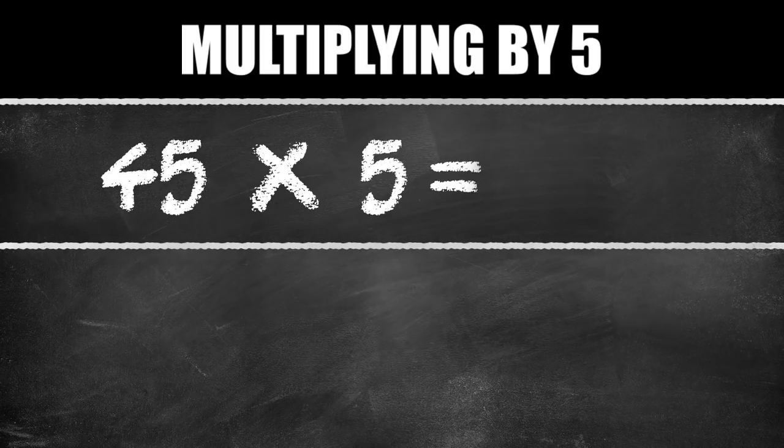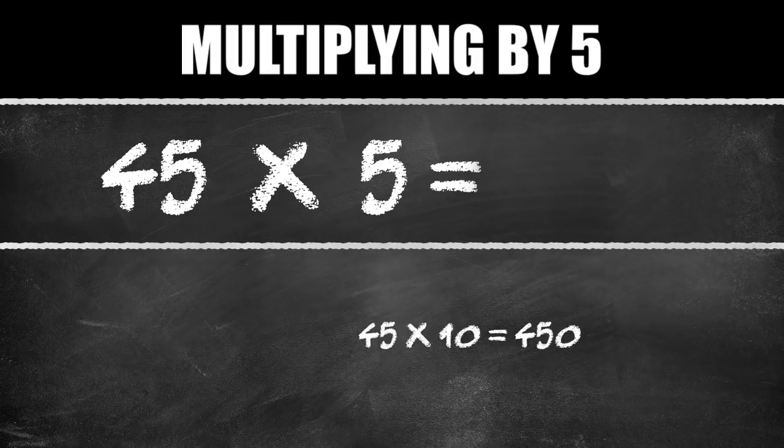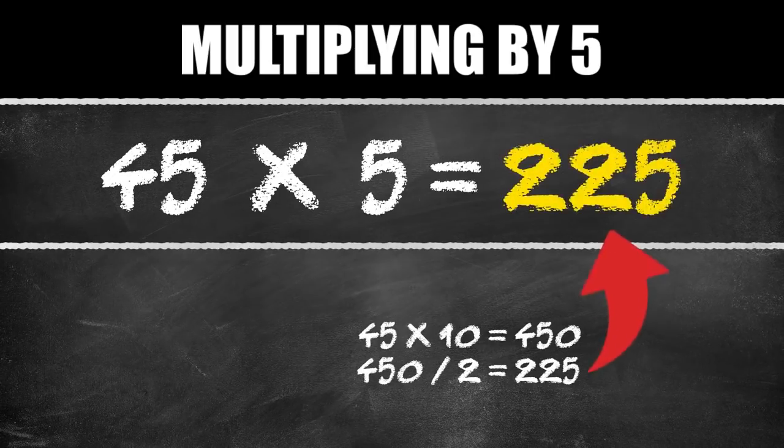Our example number is 45. 45 times 10 is 450. Since we want to multiply by 5, all we have to do is divide 450 into two parts and get the solution of 225. Quite simple, right?